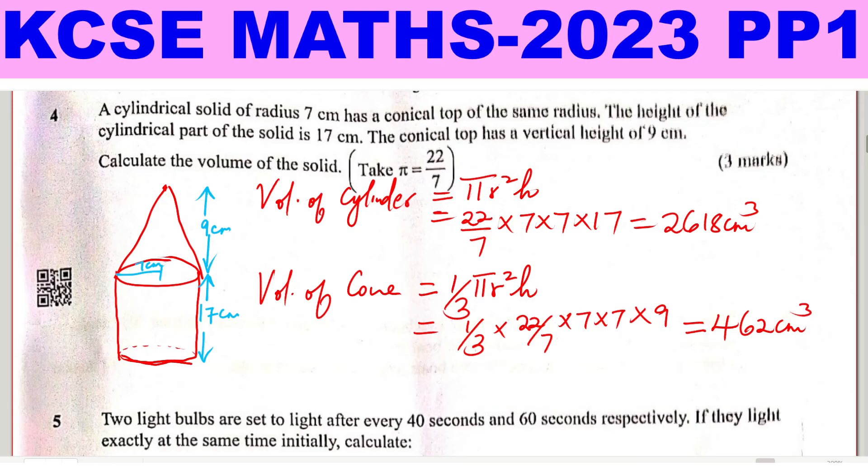Now the total volume of the whole solid, that is the volume of the cylinder plus the volume of the cone. That is what is going to give the volume of the solid. So we simply take this, we add this. The volume of the cylinder is 2,618 centimeters cubed plus 462 centimeters cubed. When you add these, you get 3,080 centimeters cubed. And that is the volume of the solid.